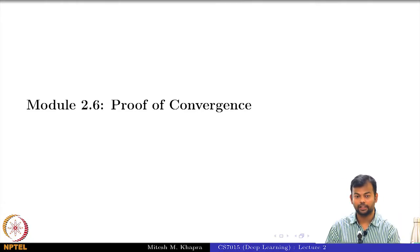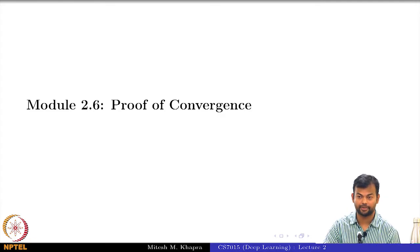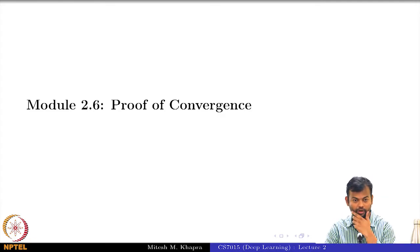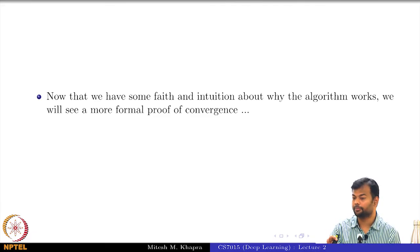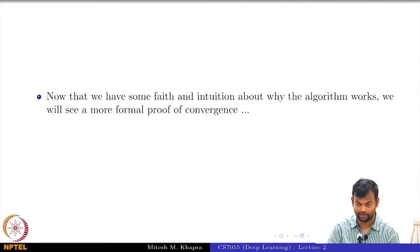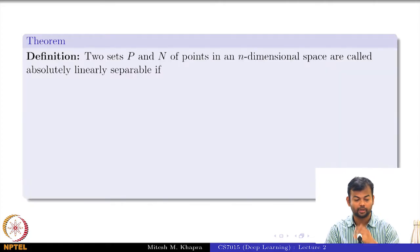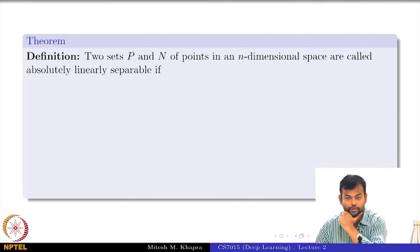In this module, we will talk about the proof of convergence for the perceptron learning algorithm that we saw in the previous module. We have some faith and intuition that it actually works; we just need to formally prove that it actually converges. That is what we are going to do in this module. But before that, a few very simple definitions.